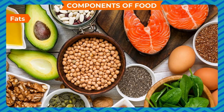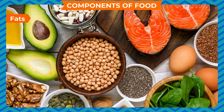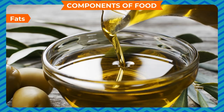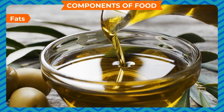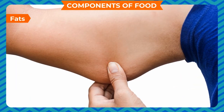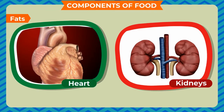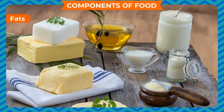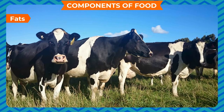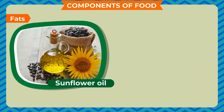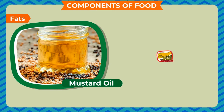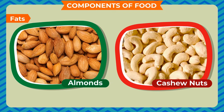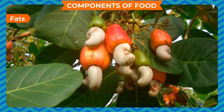Fats are also energy-giving foods; they produce more energy than carbohydrates. Fats are greasy foods obtained from plants and animals. They are stored under the skin and around organs like the heart and kidneys. When we lack energy, our body uses these stored fats. Butter and ghee are animal fats. Groundnut oil, sunflower oil, coconut oil, mustard oil, and other vegetable oils, as well as nuts such as almonds and cashew nuts, are sources of plant fats.